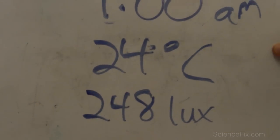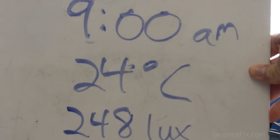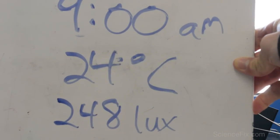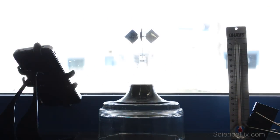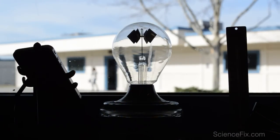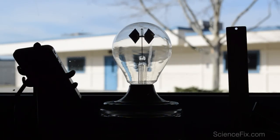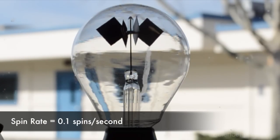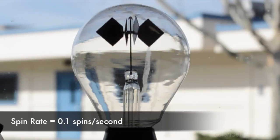Now we're about an hour later at 9 a.m. The temperature is 24 degrees Celsius and the amount of light is 248 lux. Now you can see the radiometer has started to spin and we can measure the spinning rate — how many times it goes around for every second. The spinning rate at this point in time is 0.1 spins per second.